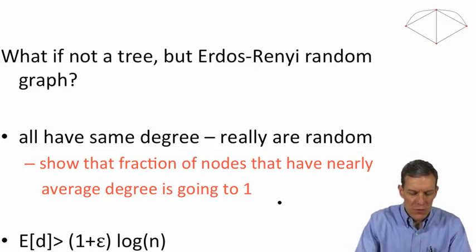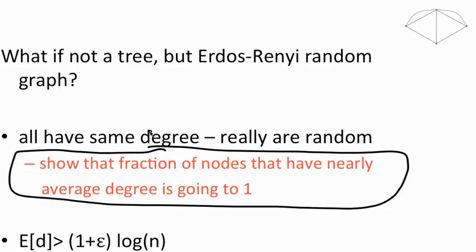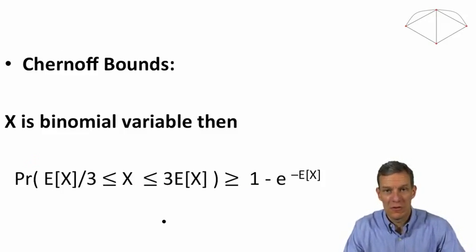So what we can show, first of all, what we'll show is that the fraction of nodes that have nearly the average degree is going to 1. And this is going to be true as long as this expected degree is at least on the order of log n. And in particular, what we're going to use to prove this are what are known as Chernoff bounds.